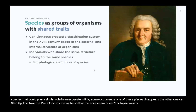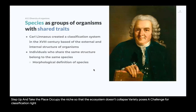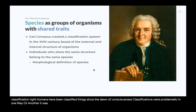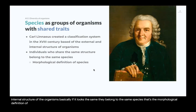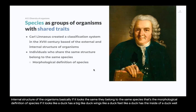But all this variety poses a challenge for classification. Humans have been classifying things since the dawn of consciousness, but these classifications were problematic. It was the Swedish naturalist Carl Linnaeus who created a classification system based on external and internal structure of organisms. Basically, if it looks the same, they belong to the same species — that's the morphological definition. If it looks like a duck, has a beak like a duck, wings like a duck, feet like a duck, has the insides of a duck — well, then it must be a duck.